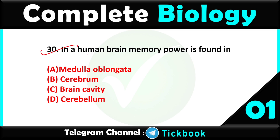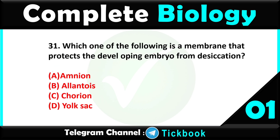Question number thirty: in a human brain, memory power is found in — cerebrum.